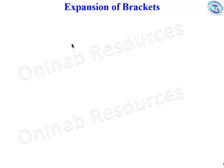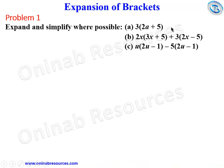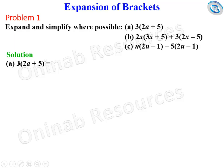Hello, welcome to this tutorial on expansion of brackets. We start with Problem 1: expand and simplify where possible. Part a is 3(2a + 5). In our solution we start from a, and we use the number outside the bracket — or whatever is outside the bracket — to multiply everything inside the bracket.